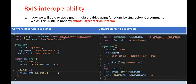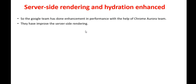For RxJS Interoperability, if you want to convert an observable to a signal, you use the `toObservable` method, which comes from the library `@angular/core/rxjs-interop`. If you want to convert a signal into an observable, you use the `toSignal` method. These are the methods through which we can convert from one to the other.